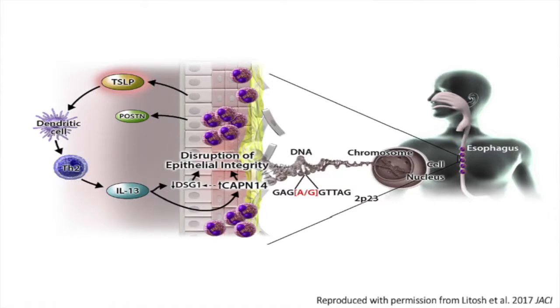The disease, however, is chronic and will universally relapse, so we need to understand more about treating it. We now understand the basic pathophysiology of the disease, as shown in the next slide, which involves specific susceptibility elements in the genome — genetic variants — particularly focused on a major variant in the calpain-14 locus on chromosome 2p23.